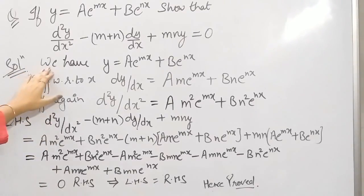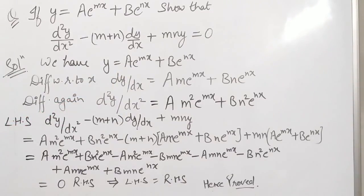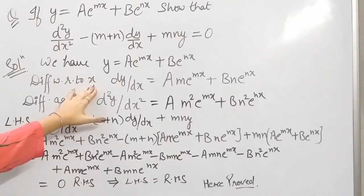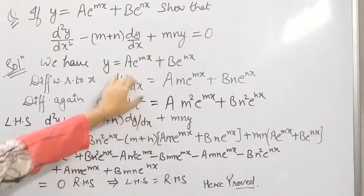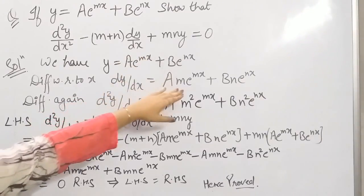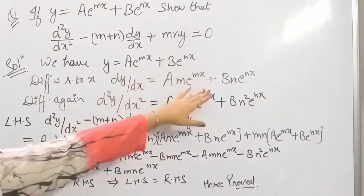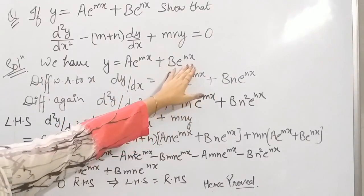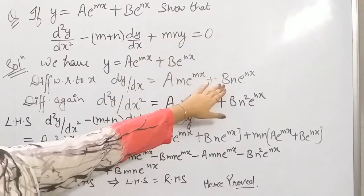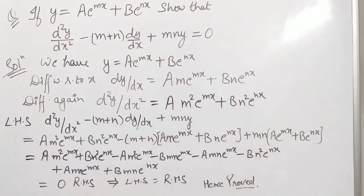We have y equals to ae^(mx) plus be^(nx). Differentiating with respect to x, we get dy/dx equals a·m·e^(mx) plus b·n·e^(nx), since differentiation of e^(mx) is m·e^(mx) and differentiation of e^(nx) is n·e^(nx).